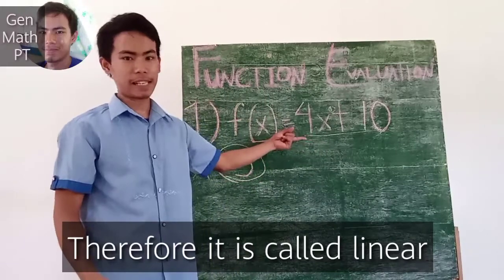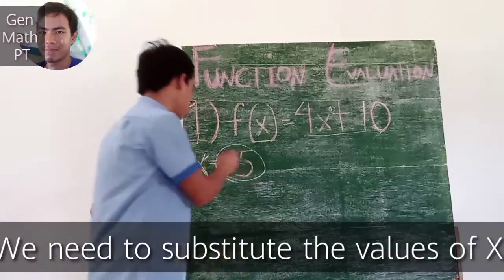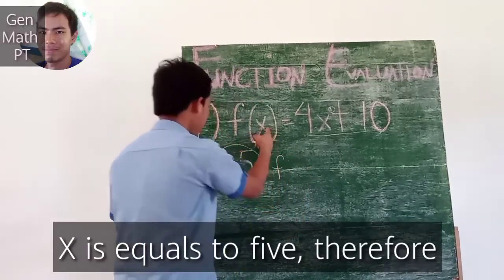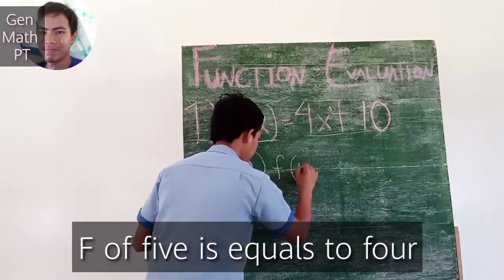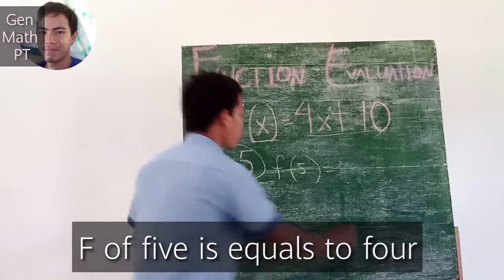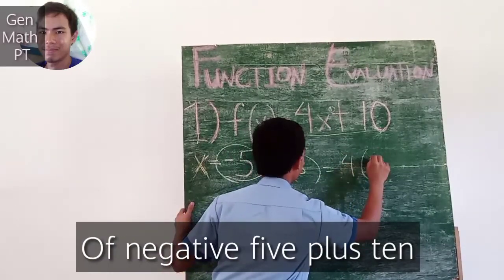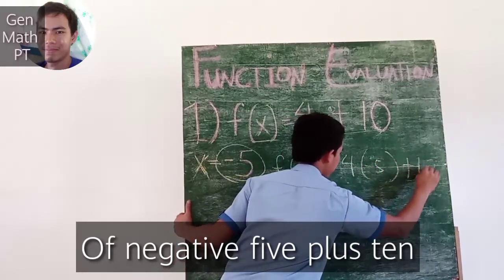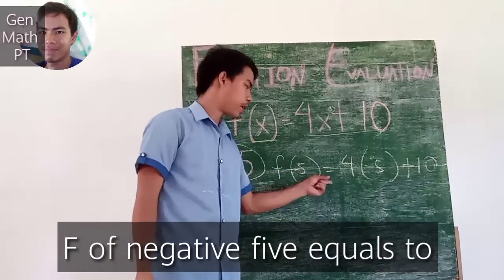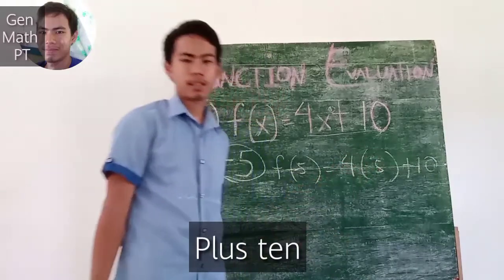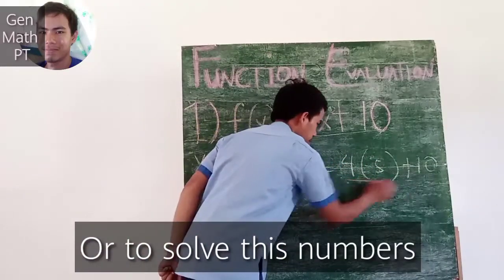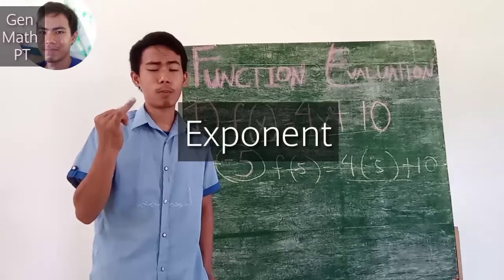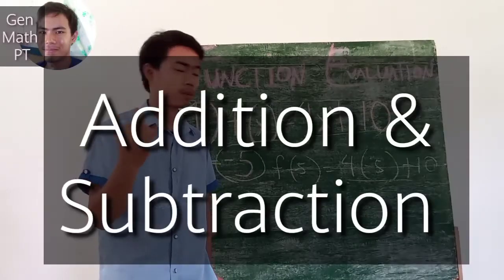Therefore it is 1, therefore it is called linear. To evaluate this, we need to substitute the values of x, and x is equal to 5. Therefore, f of 5 is equal to 4 times negative 5 plus 10. To solve this equation, we need to follow the PEMDAS pattern, which stands for Parenthesis, Exponent, Multiplication, Division, Addition, and Subtraction.